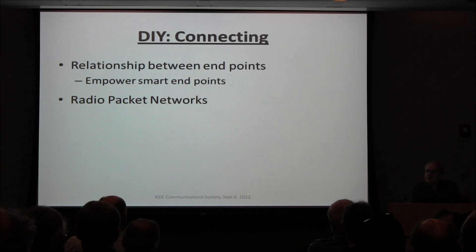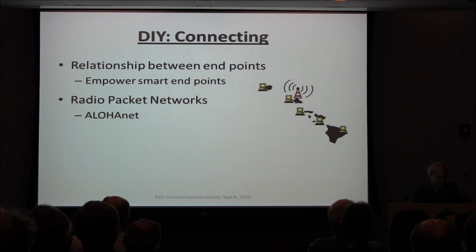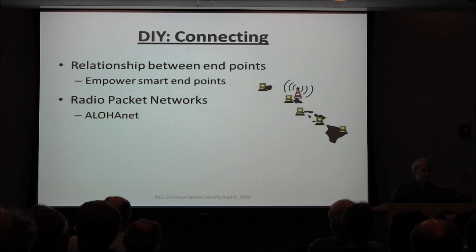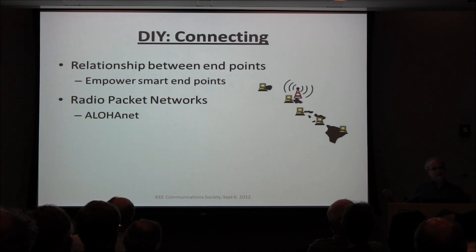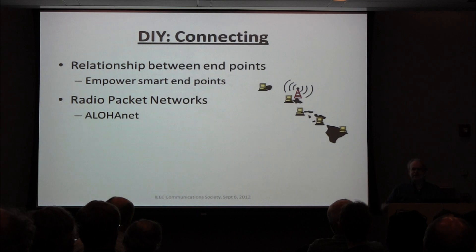Looking at the history of radio packet networks: in the 1960s there was ALOHAnet in Hawaii, which used an unreliable radio packet network to exchange messages between computers. You wanted to send a message, you sent it to that antenna, and you would get an acknowledgement back — actually by slow phone wire — saying the message got through. If it didn't, software would say send it again. It was sort of an obvious thing to do.